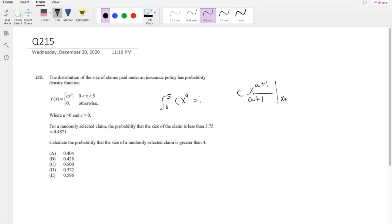Here, evaluating x from 0 to 5, so that's going to be equal to 5^(a+1) over (a+1) is equal to 1.